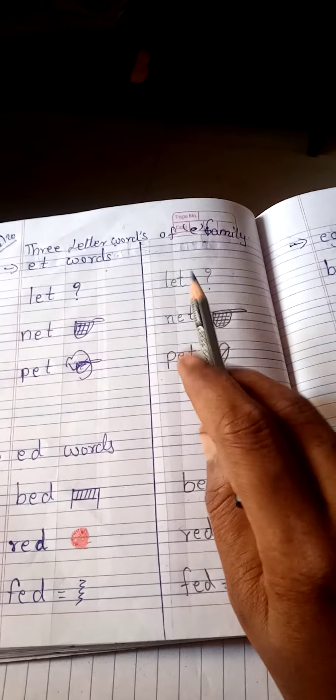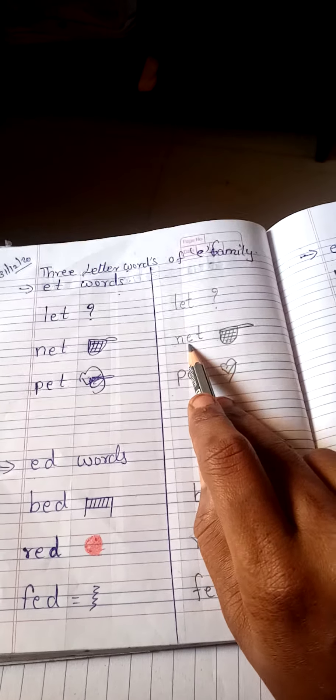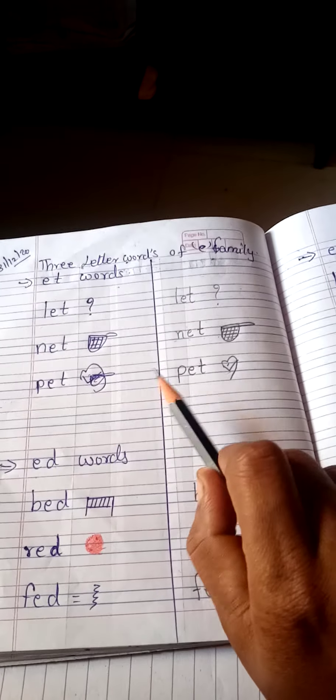Now repeat back, my children. L-E-T, late. N-E-T, net. P-E-T, pet. B-E-D, bed. R-E-D, red. F-E-D, fed.